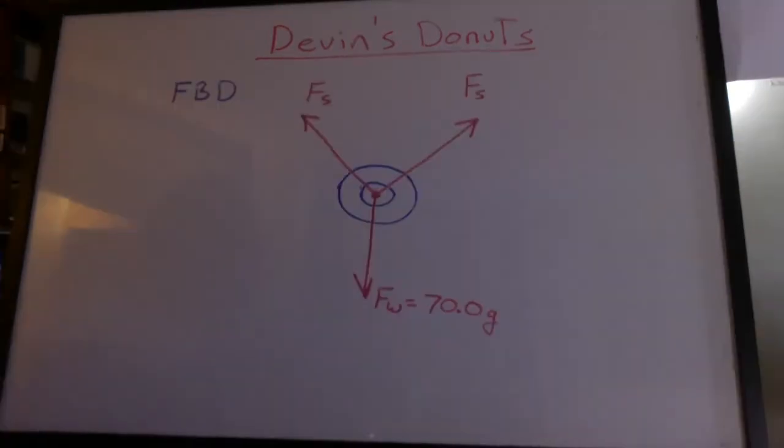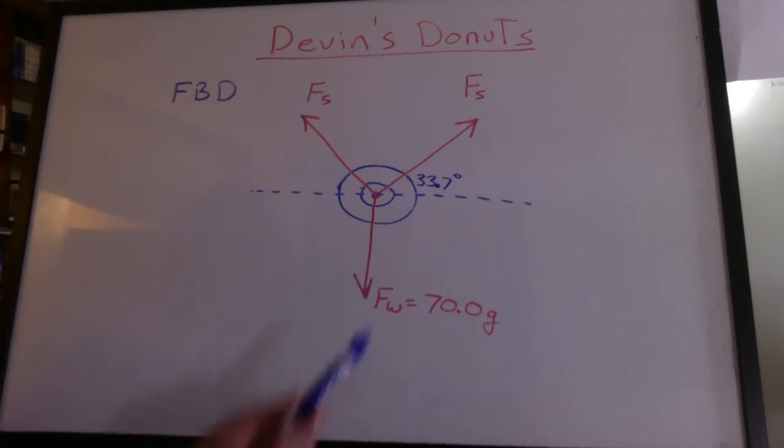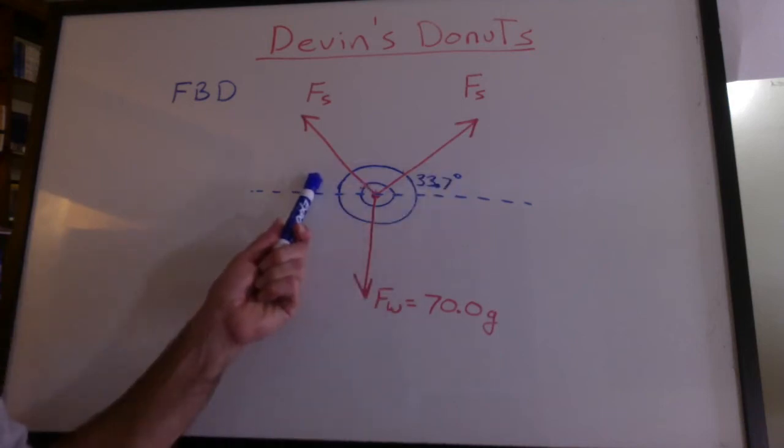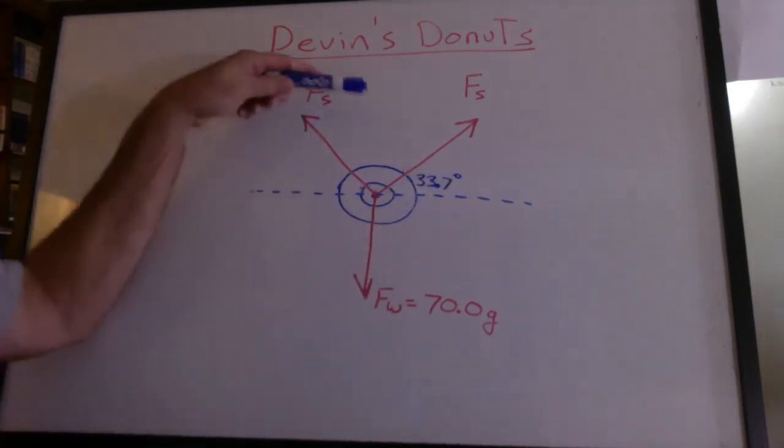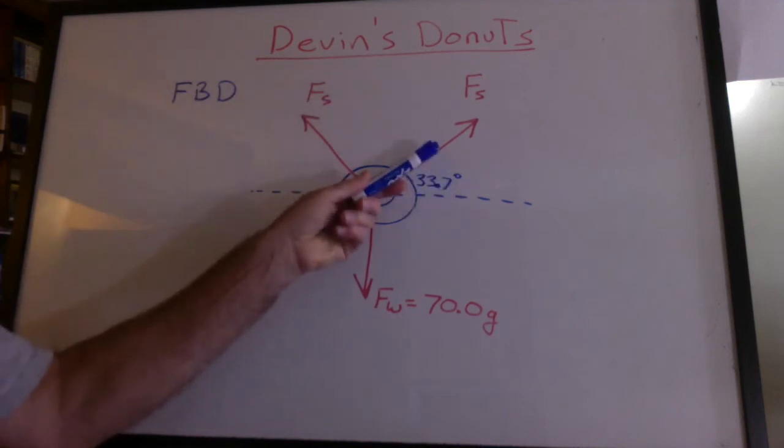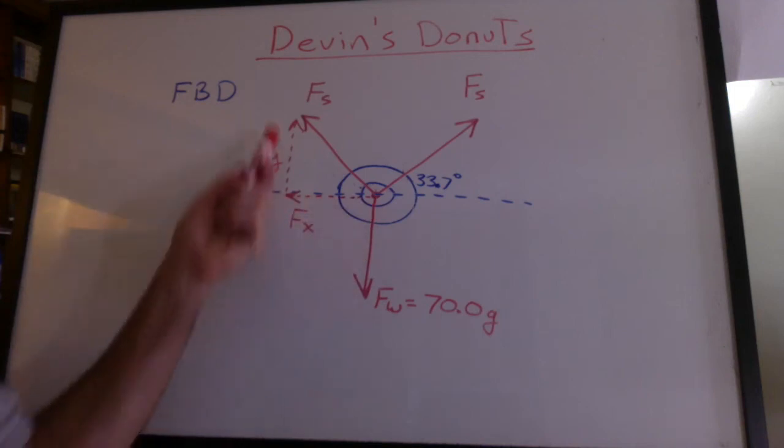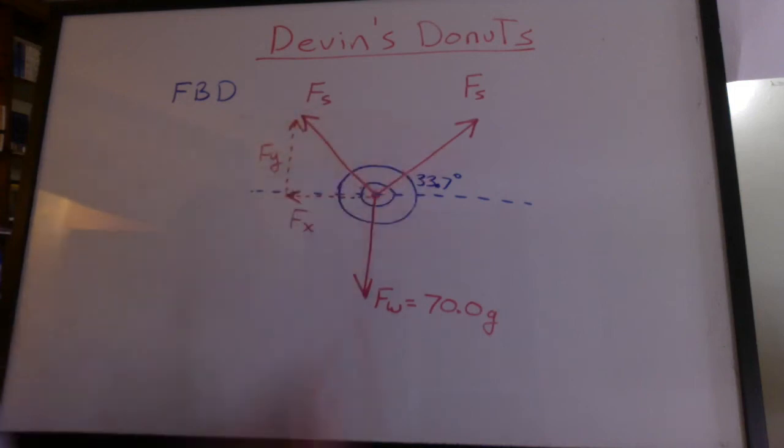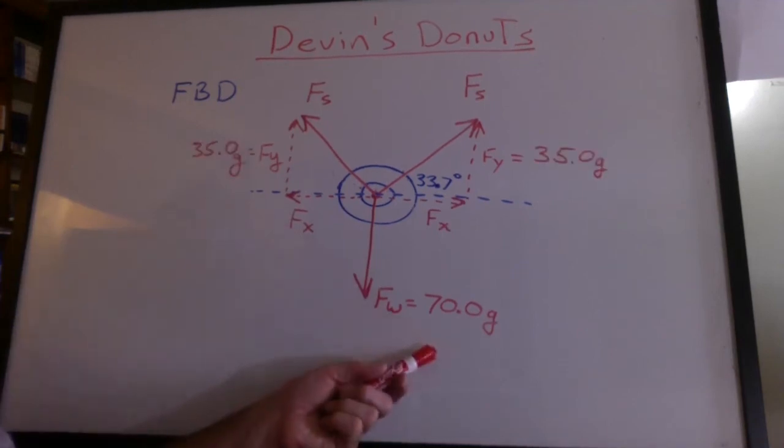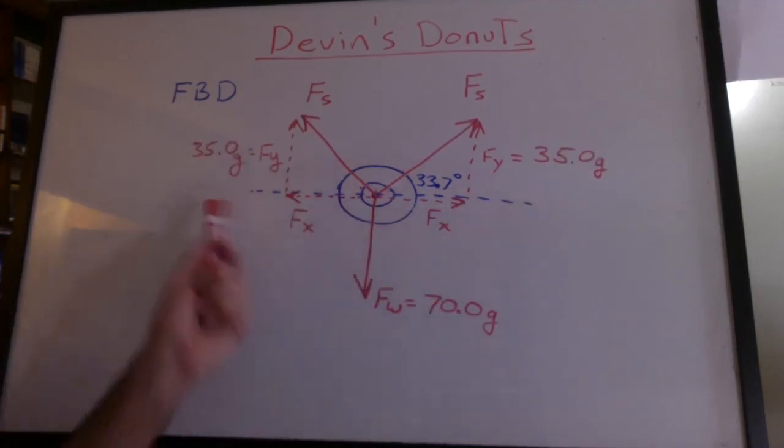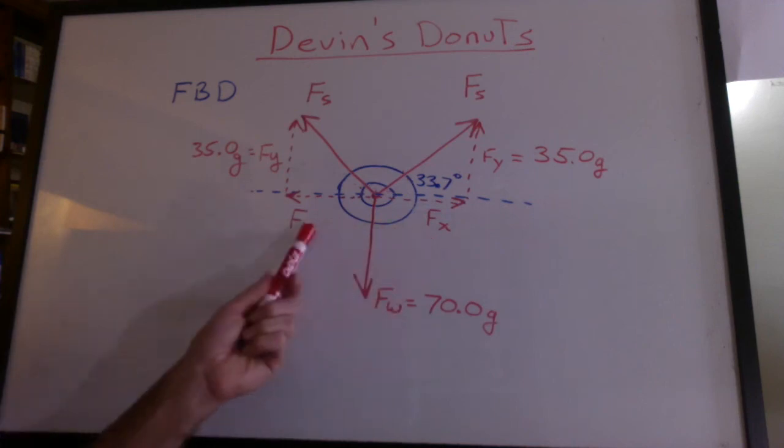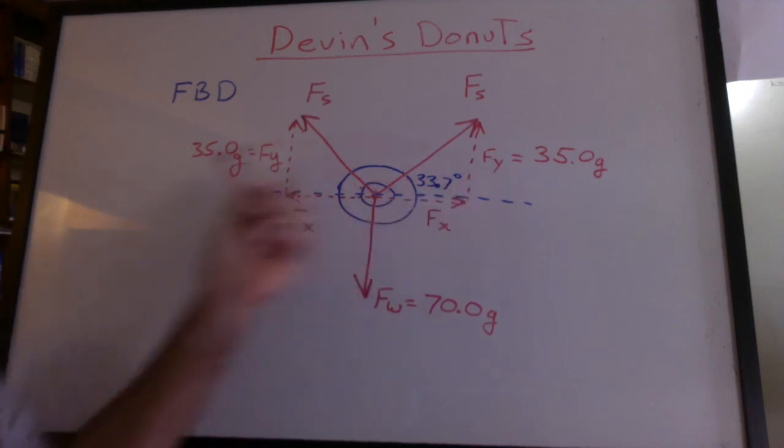Time for a free body diagram. Now we have symmetry in the problem. Both of these angles are 33.7. It's the angle below the horizontal or the angle above the horizontal. It's the same angle. Of course, we have an x component and a y component of each spring scale. Each y component equally shares the load of 70 grams. So they're 35 each. Well, that has to be true because the x components have to be equal. It's not going sideways. Those angles are equal. Well, then these have to be equal.